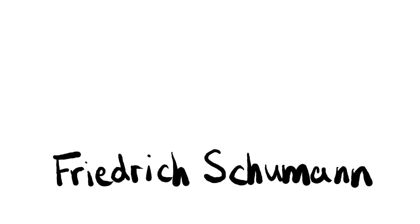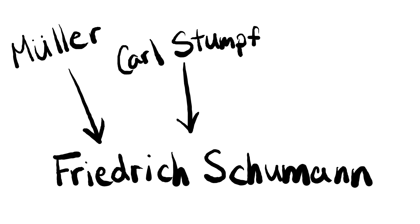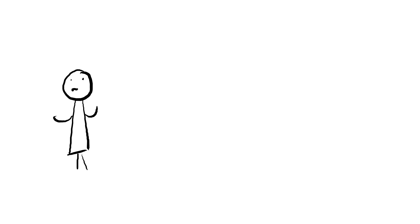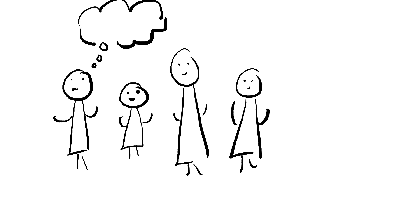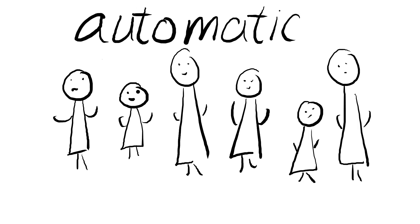Schumann was a student of Müller. He also worked with Stumpf and was involved later on in the Gestalt movement. Together, they wanted to recreate Ebbinghaus' memory experiments, but wanted to run them on multiple subjects. That's why Müller wanted to come up with a way to present stimuli automatically.